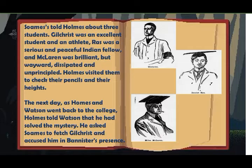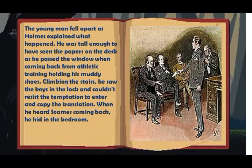Holmes visited them to check their pencils and their heights. The next day, as Holmes and Watson went back to the College, Holmes told Watson that he had solved the mystery. He asked Soames to fetch Gilchrist and accused him in Bannister's presence. The young man fell apart as Holmes explained what happened.